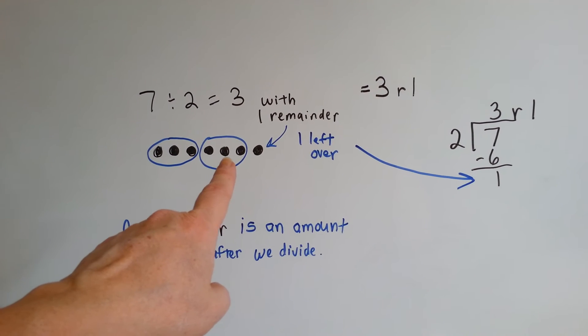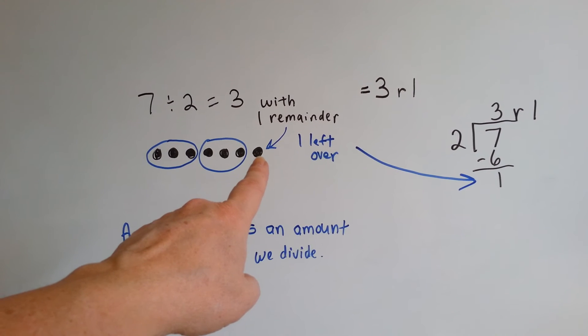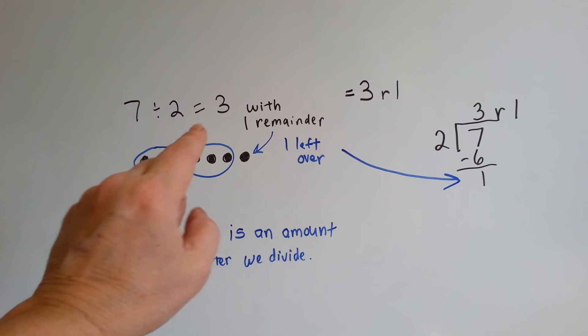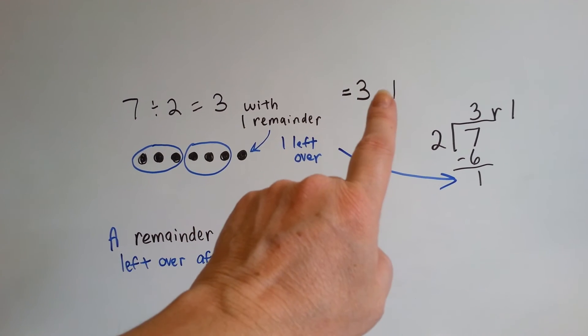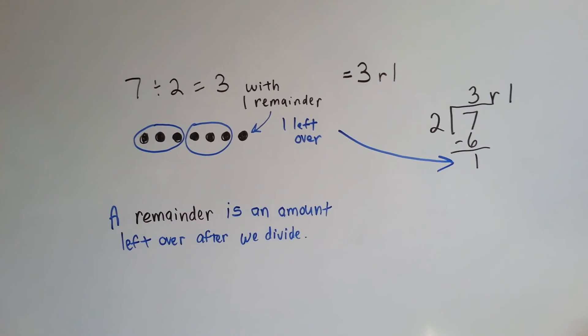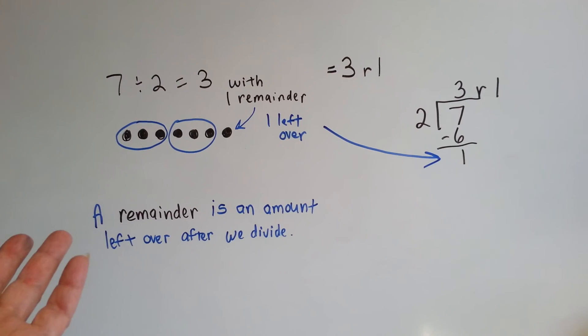We can put three in this one, three in that one, but we can't put that one anywhere. It's one that's left over. So, we would say the answer is three remainder one, or three R one. A remainder is an amount that we have left over after we divide.